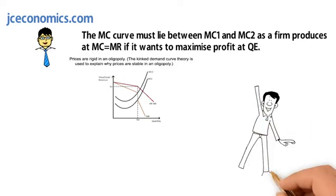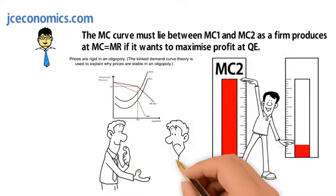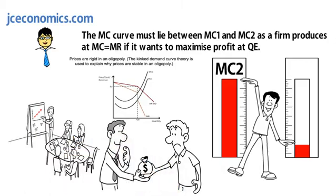If the marginal cost was to rise to MC2, the firm would cover the cost and take less profit. And this change does not affect the output quantity.